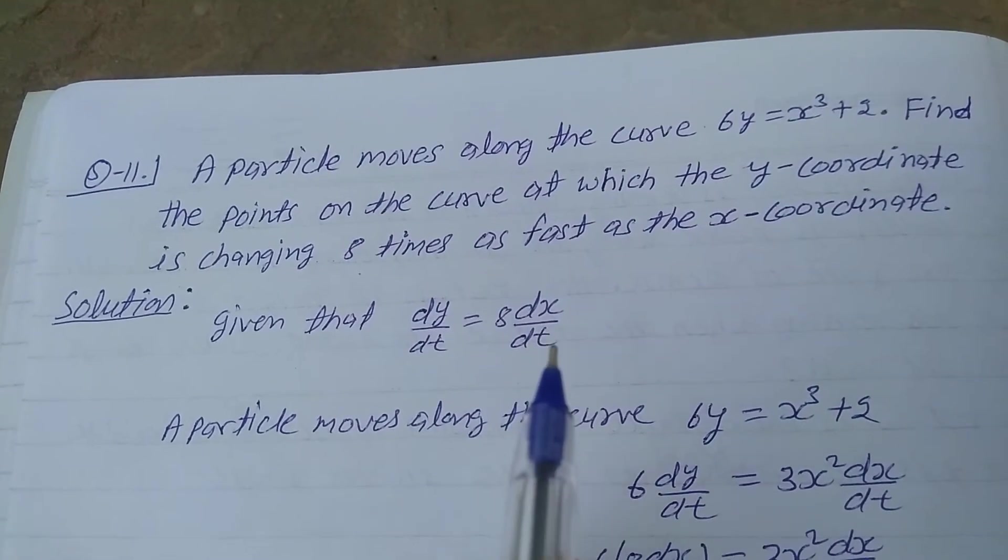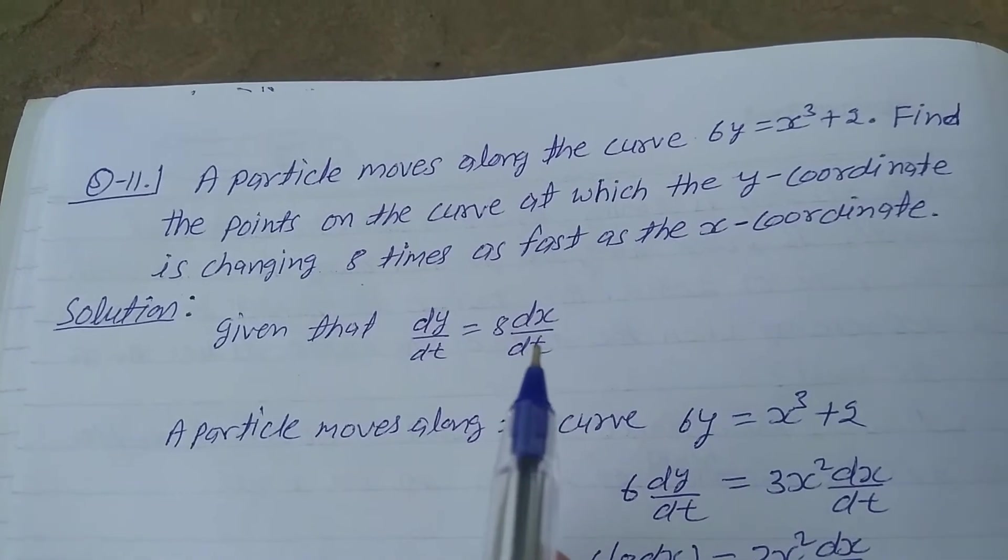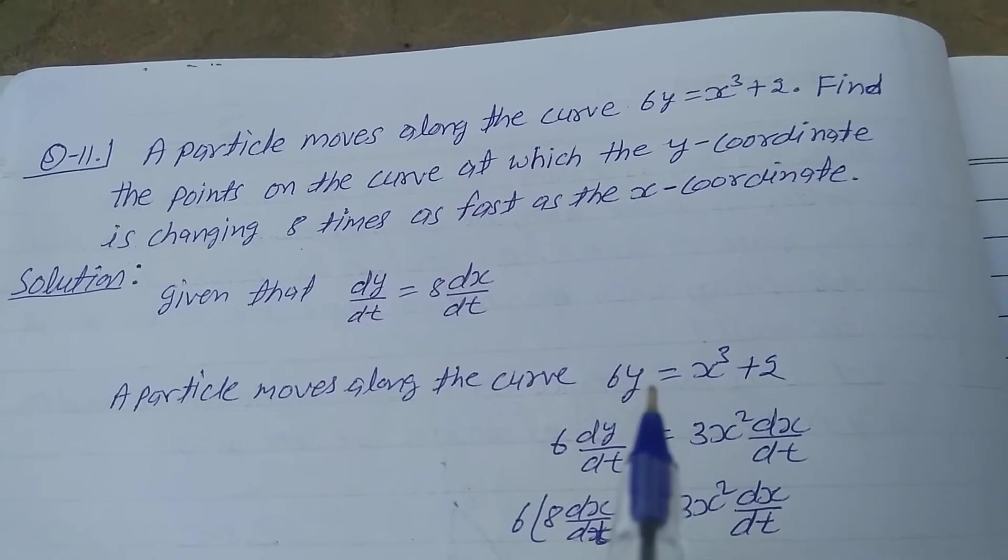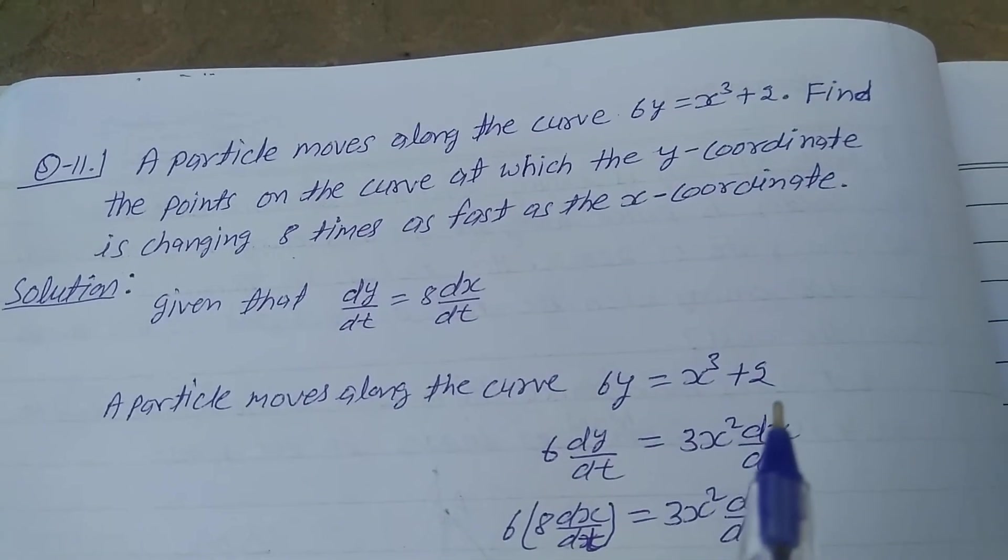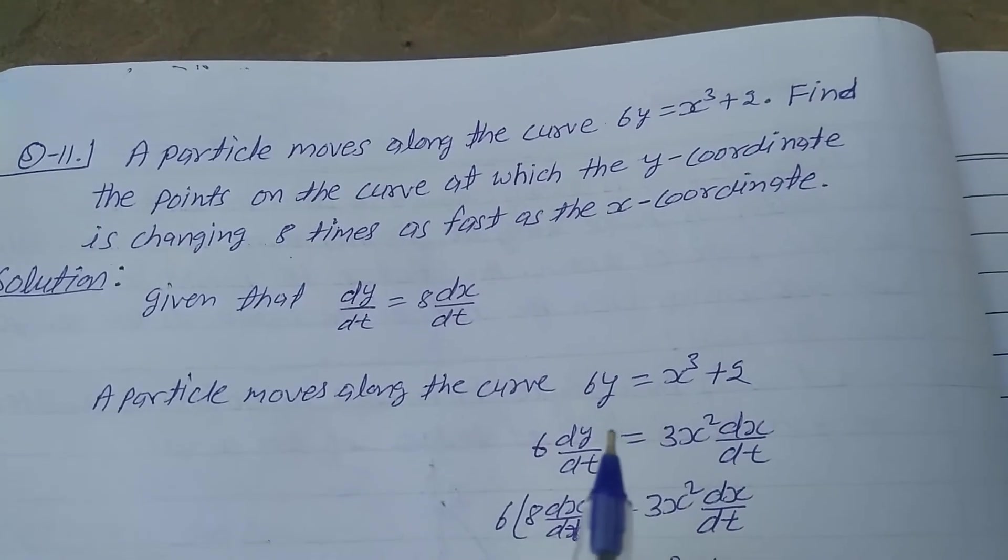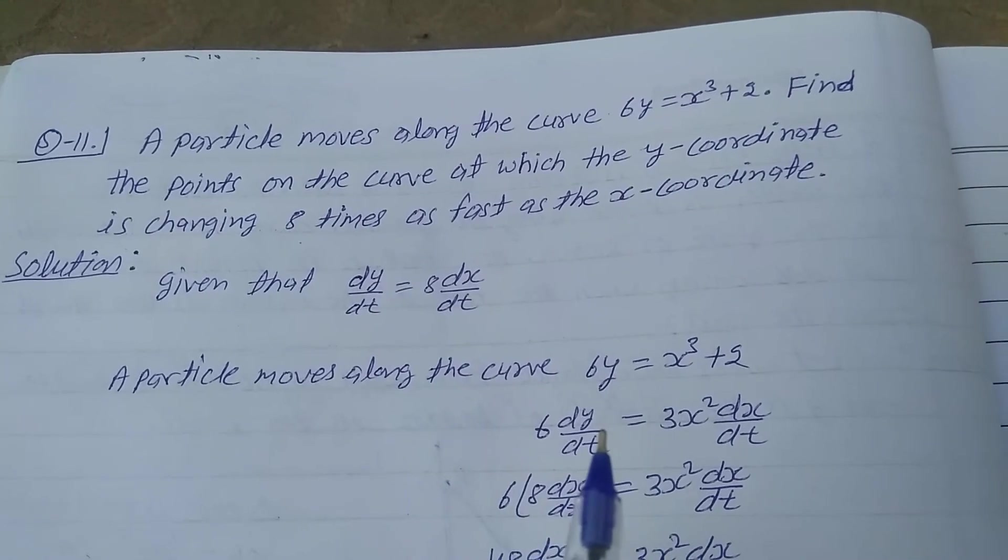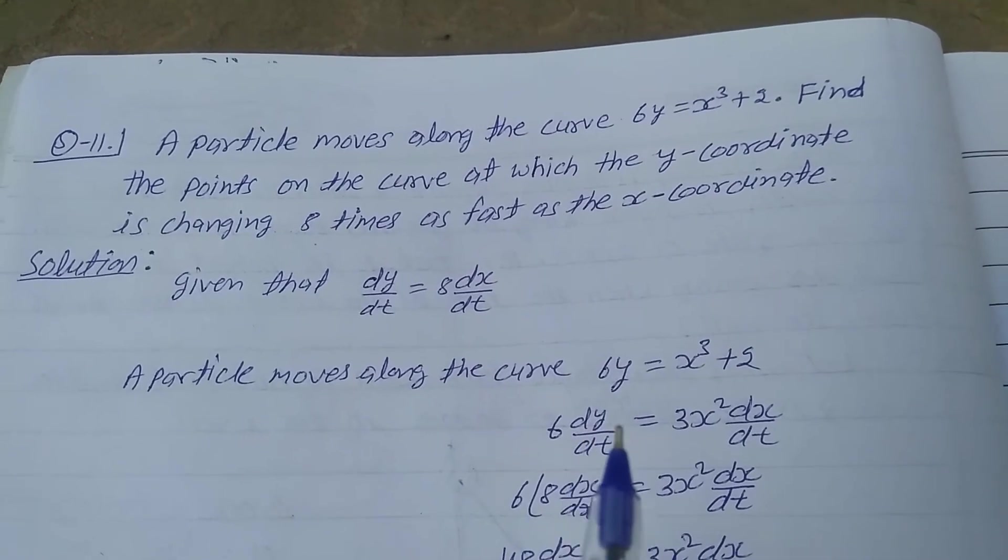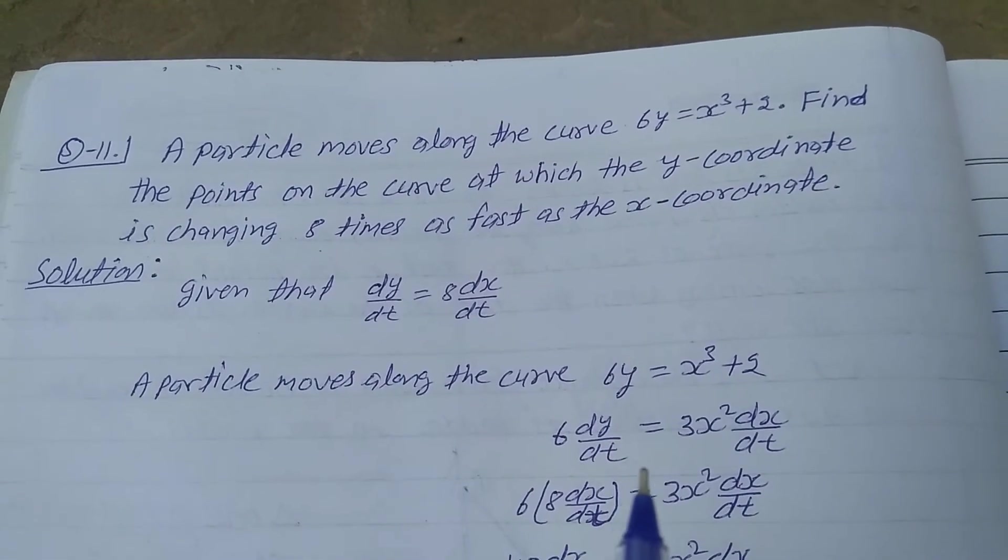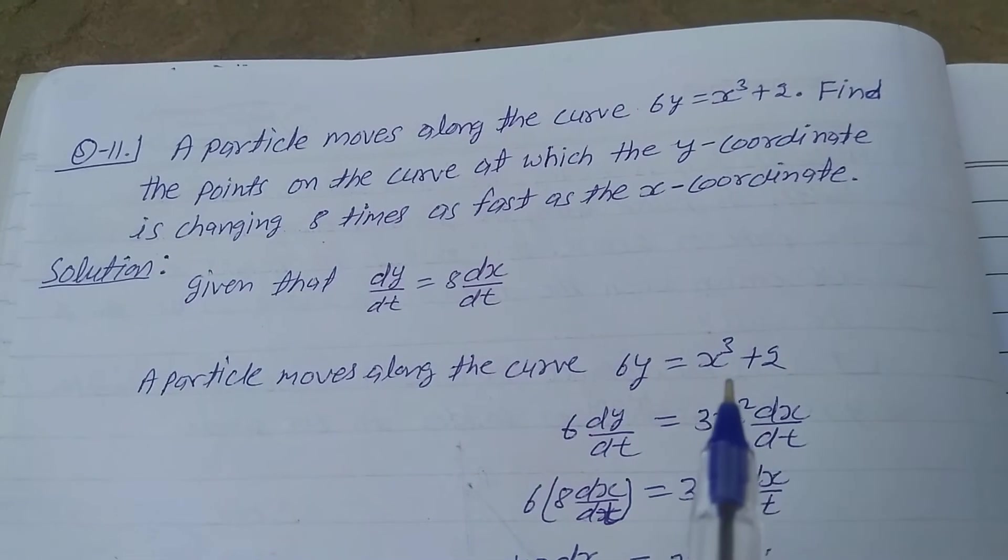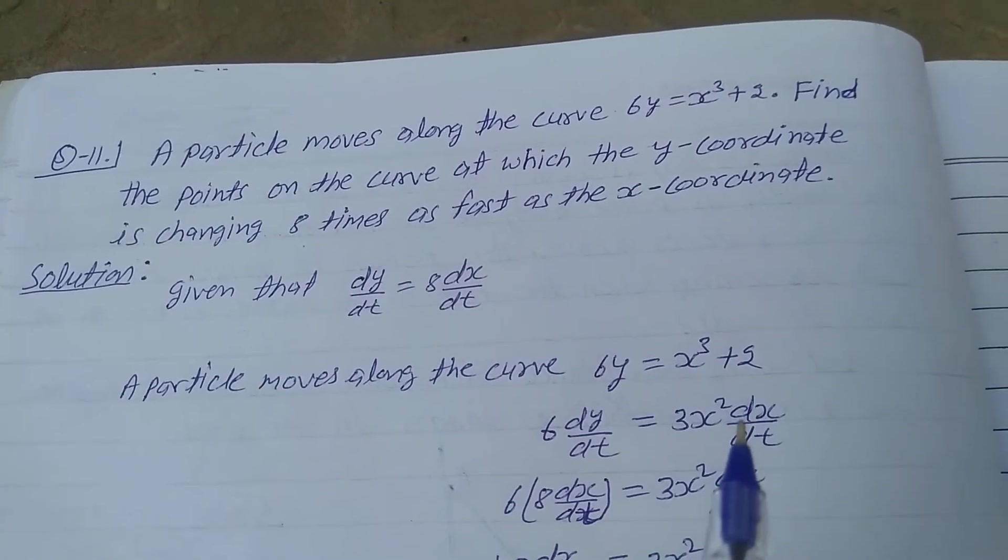That condition is given in the question. And a particle moves along the curve 6y equals x cubed plus 2. So differentiate with respect to t the curve. So 6 dy/dt equals x cube differentiated is 3x² dx/dt, and 2 differentiated is 0.